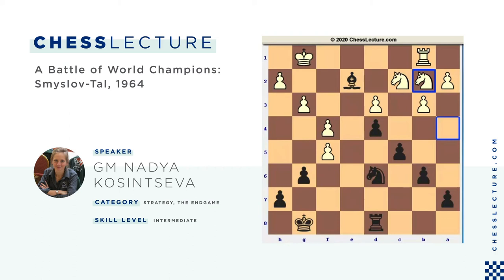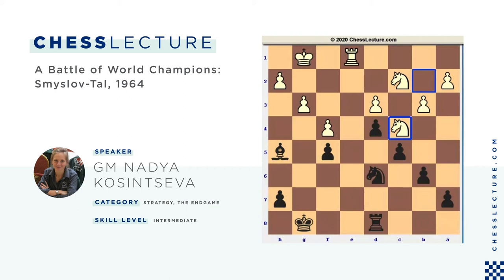Black took the pawn back: gxf5. Re1, Bh5. Nc4 — pretty logical from white's point of view; the knight is doing nothing and for a weaker side it can be a good strategy to simplify and trade pieces. However, after Nxc4, bxc4, Re8 — Tal offers another trade, but it does not mean it becomes easier for white to defend. Black is better — it's a long-term advantage.